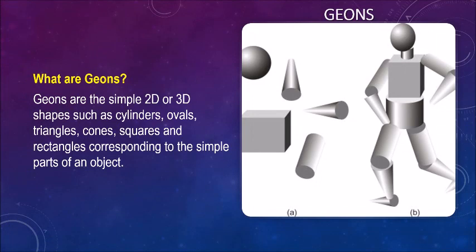What are Geons? Geons are the simple 2D or 3D shapes such as cylinders, ovals, triangles, cones, squares and rectangles corresponding to the simple parts of an object, such as a robot.